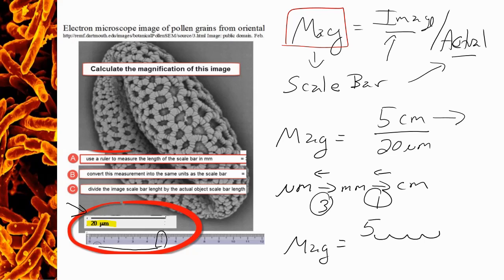So we're going to move the decimal point one, two, three, four spots to the right, which tells us that 5 centimeters is the same as 50,000 micrometers.